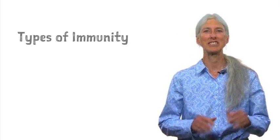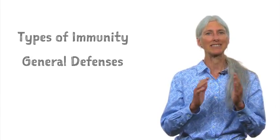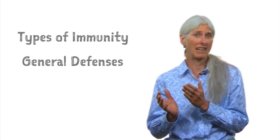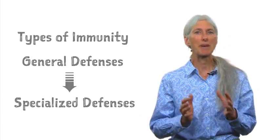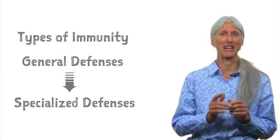Our defense system is arranged in levels that are ordered from general defenses against types of invaders, for example viruses, to highly specialized forces that protect us against one specific type of organism.